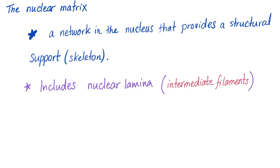The nuclear matrix, or the substance of the nucleus itself, provides support, and it includes something called the nuclear lamina, a subtype of intermediate filaments, which I've talked about in a previous video.